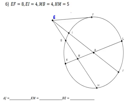So let's start by filling in our values. We know that EF is 8, EI is 4, MB is 4, and HM is 5.